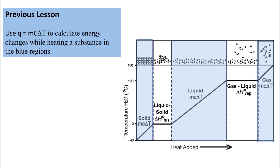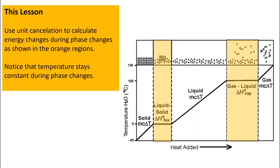In a previous lesson, you used Q equals MC delta T to calculate energy changes while heating a substance as shown in the blue regions. In order to use this equation, you had to have a temperature change. In this lesson, you're going to be calculating the heat changes that take place in the flat regions where the temperature is staying constant. You will use unit cancellation to calculate the energy changes.